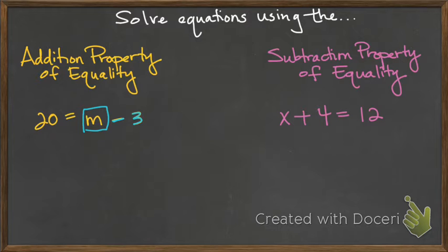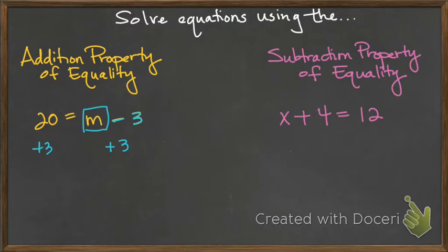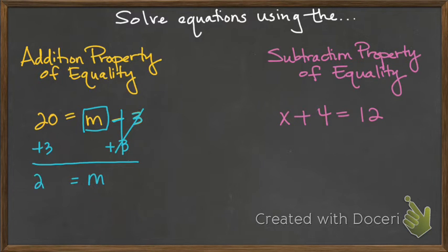So I'm going to do the inverse of subtracting 3, which is to add 3. You might know this from when you first learned one-step equations, but maybe they didn't talk to you about why you can add 3 on both sides. The why is the addition property of equality, which allows you to add the same number on both sides without changing the value of the variable. So minus 3 plus 3 cancels out, and I have m equals 23. That's my answer, found using the addition property of equality.